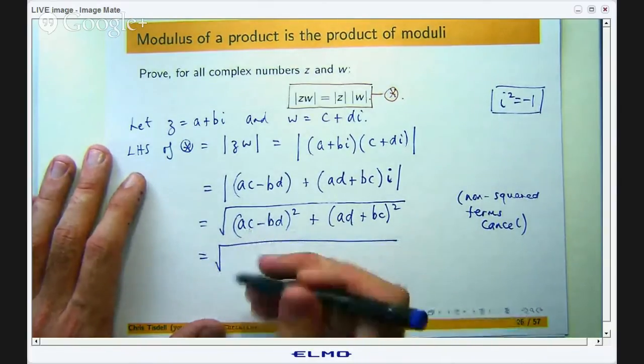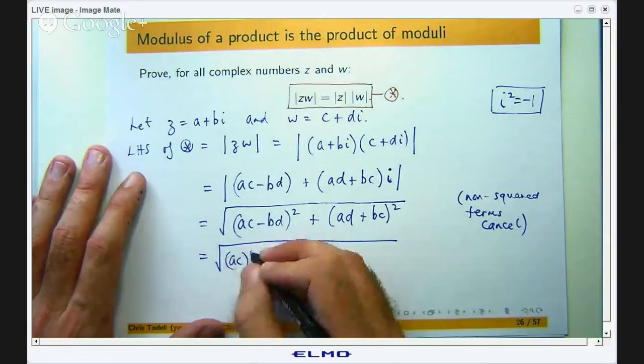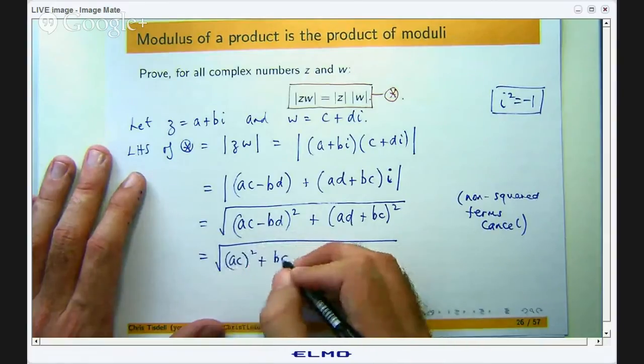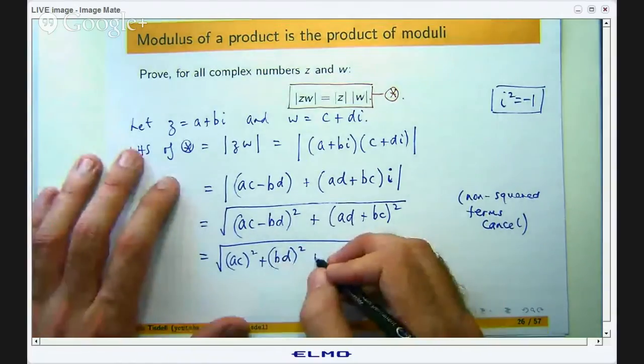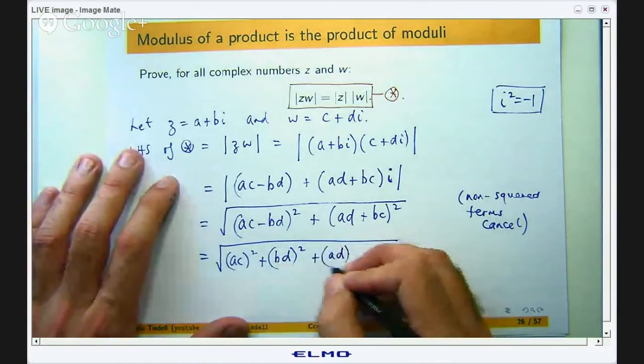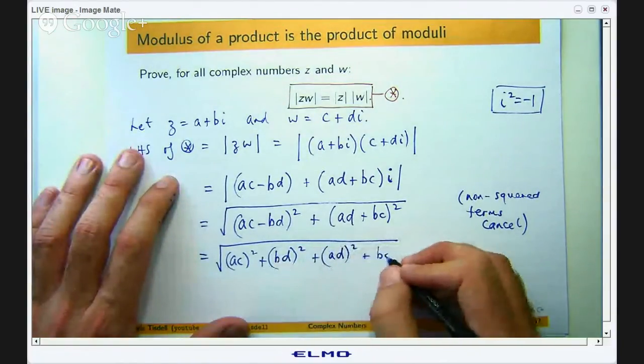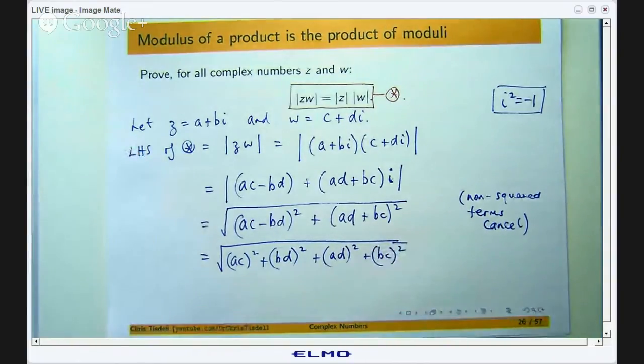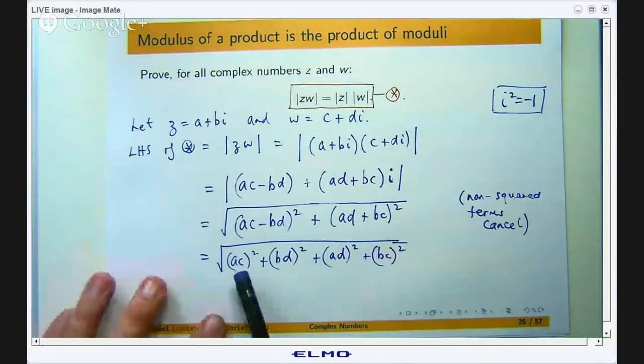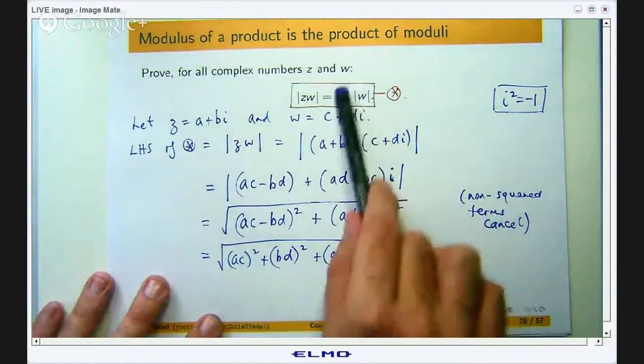Okay, so we're going to have ac squared plus bd squared plus ad squared plus bc squared. So what I'm trying to do now is trying to simplify this as much as I can to try to come up with something like this.